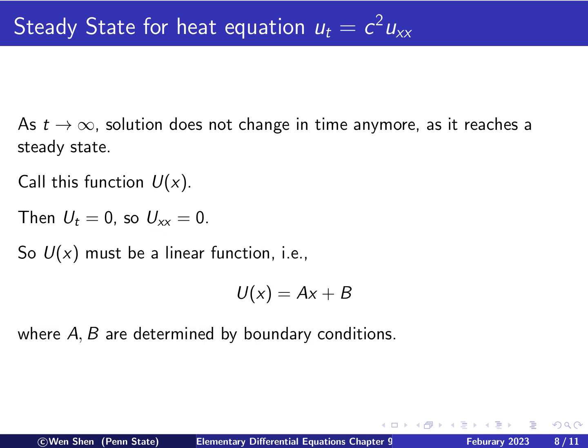So one space dimensional function, if the second derivative is zero, that means it's a linear function. So that means U of x will be Ax plus B for some suitable constant capital A and capital B, which will be determined by the boundary conditions of the problem.